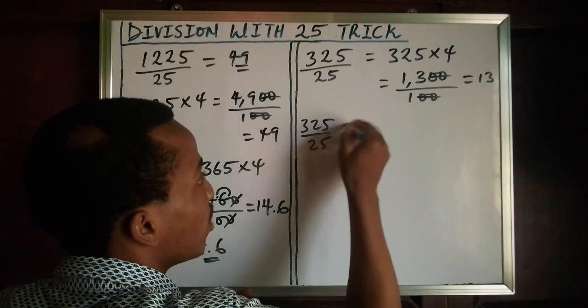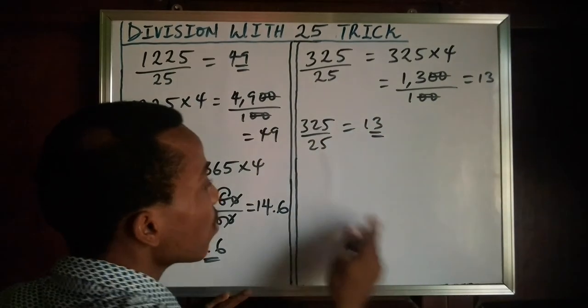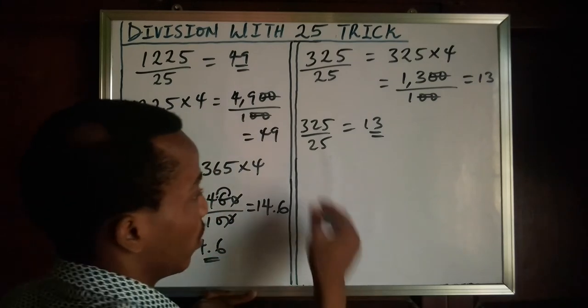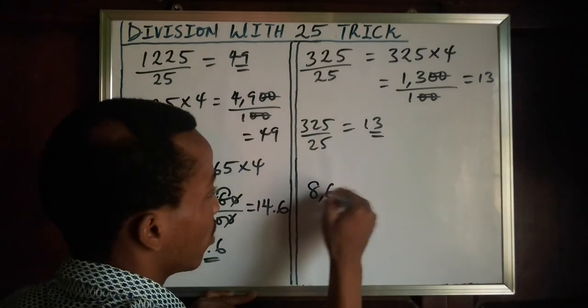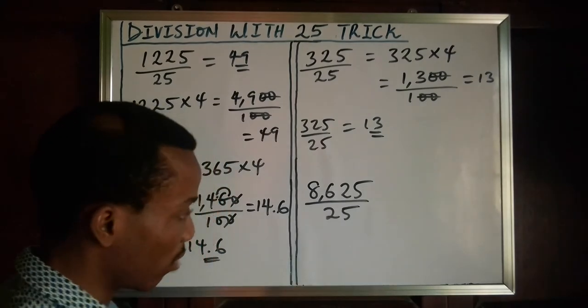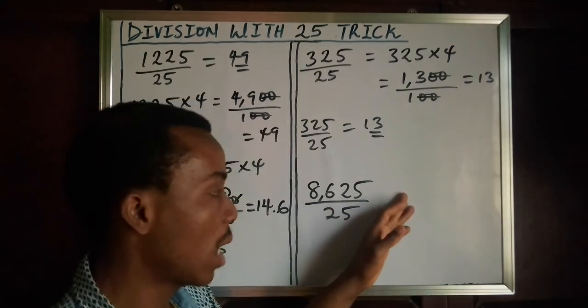You can try this: 8625 divided by 25. Don't forget to multiply the numerator by 4 and divide your answer by 100.